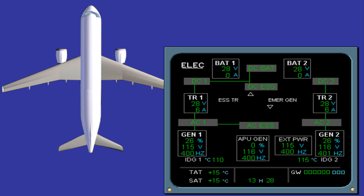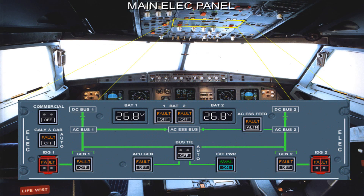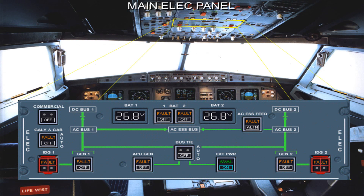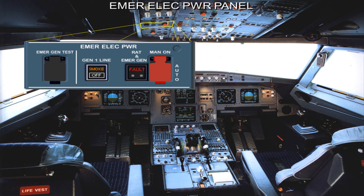As shown, each component can be monitored via its indications. The electrical panel is located on the overhead panel. On the A318, a commercial push-button switch is added on the electrical panel. For emergency cases, there is an EMER-ELEC power panel on the left-hand side of the overhead panel. Now let's look at the relationship between the electrical panel and the ECAM electrical page.